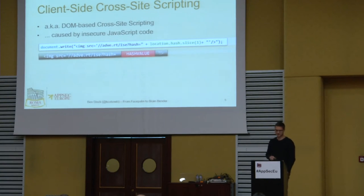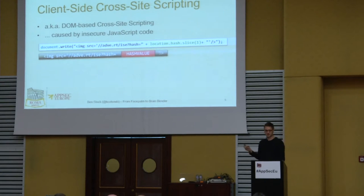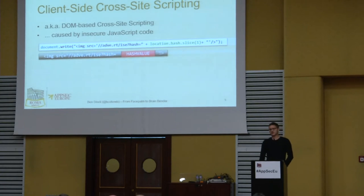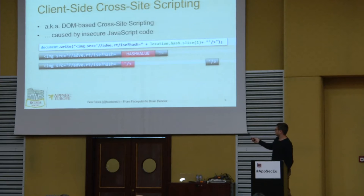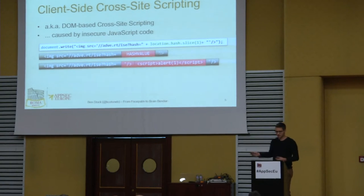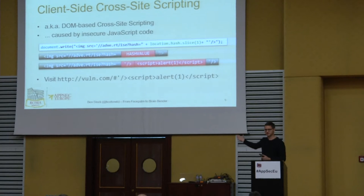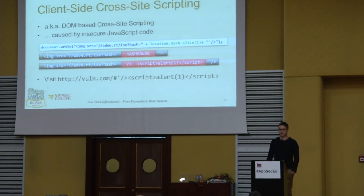Typically the data flow has hard-coded parts and the hash value from the user. As an attacker, I can modify the hash value however I want. To exploit this, I first break out of the existing image tag by closing the source attribute with a single quote, then break out of the image tag itself and inject JavaScript or HTML — in this case, alert(1). I can then visit the site myself or force a victim to browse to that location, exploiting the vulnerability in their browser.